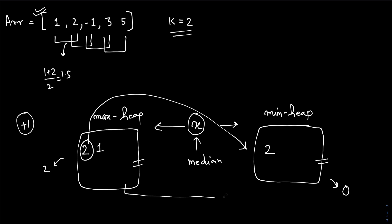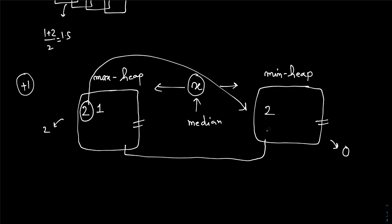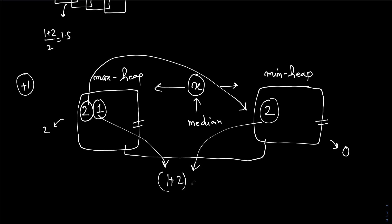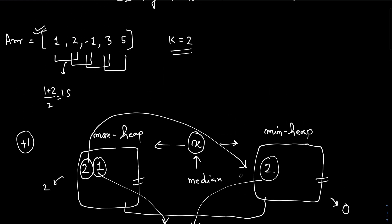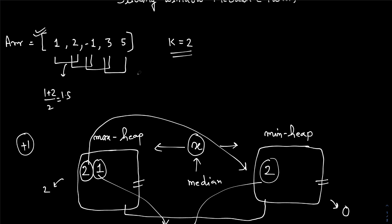Now I have to find the median at this point. If the sizes of the heaps are the same, it means we have an even number of elements, so we have to take out the top elements of both heaps and find their average, which is 1.5.